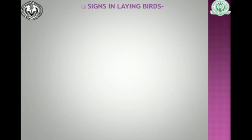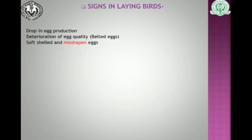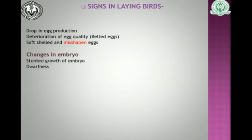Coming to the signs in laying birds, the main sign is a drop in egg production. There is also deterioration of egg quality, causing formation of soft-shelled and misshapen eggs, including belted eggs. Changes in embryos are also observed — the embryos are stunted and dwarf. The respiratory signs seen in the previous two groups are less obvious in laying birds.